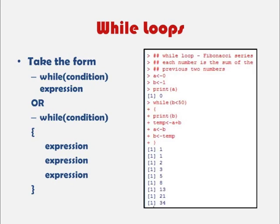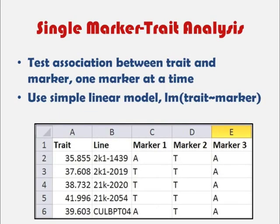And the while loop takes the form of while followed by a condition and then an expression or a series of expressions. And the example here is a Fibonacci series. And so you can see we have a series of commands and our condition, while b is less than 50, followed by a series of expressions so that we obtain a Fibonacci series as our output.